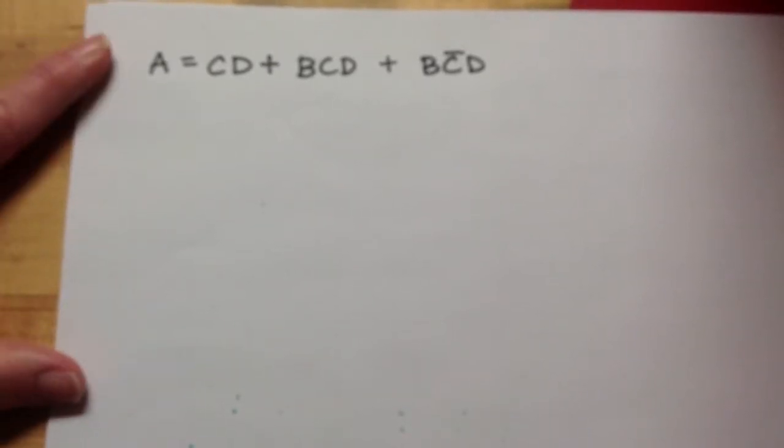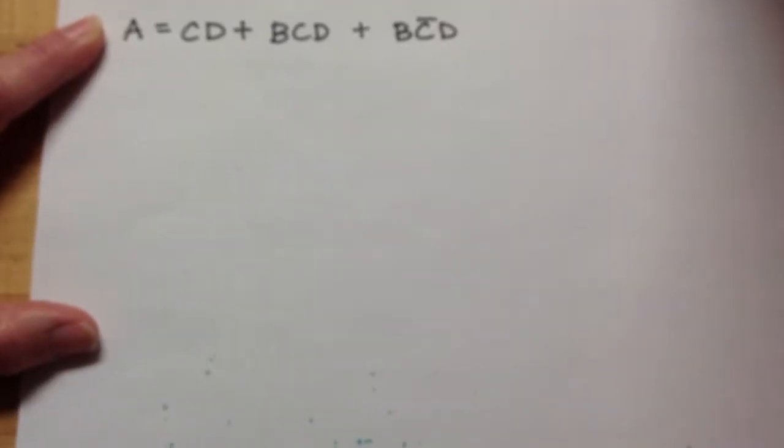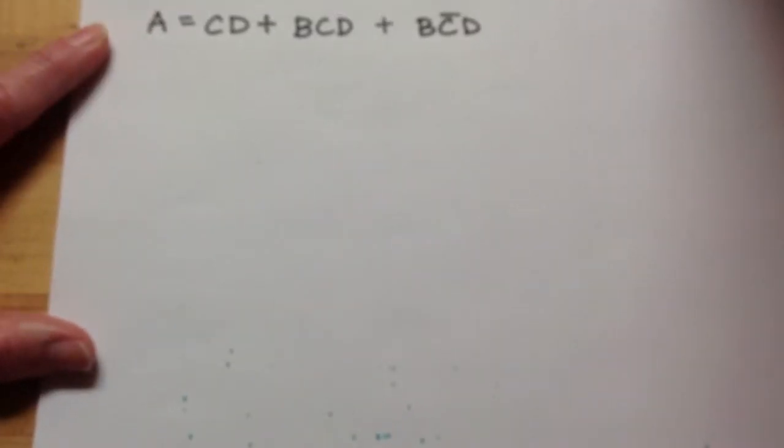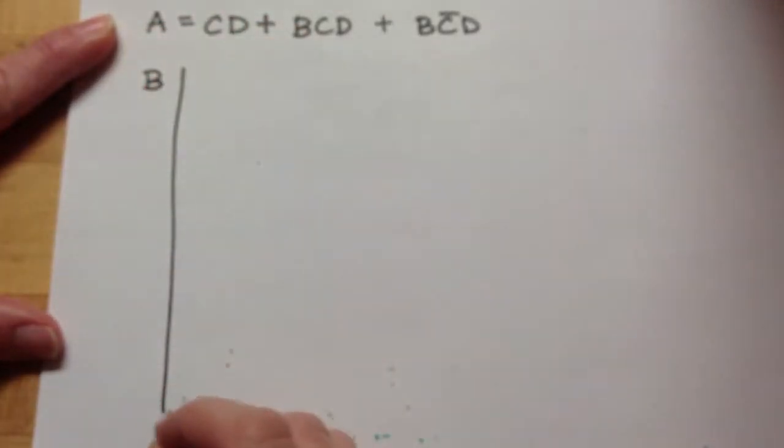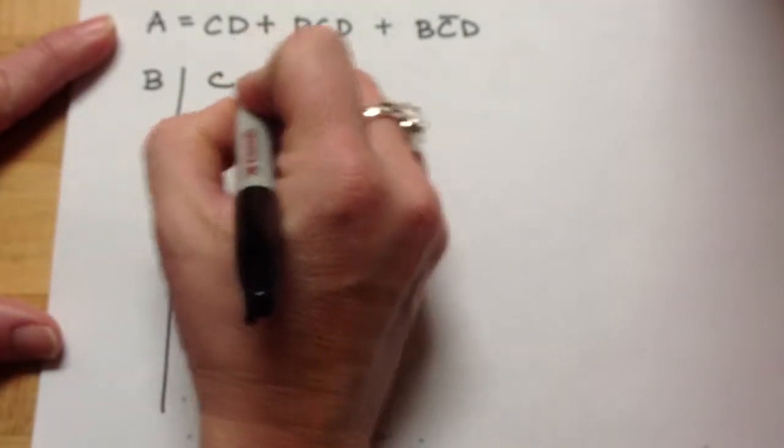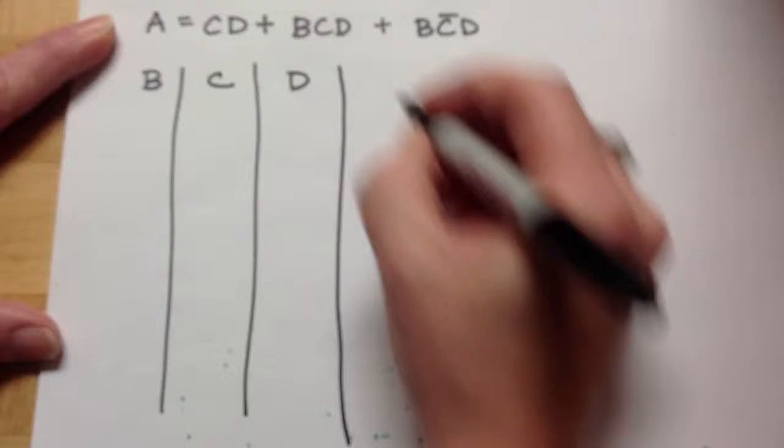Now what I'd like to do is I'm going to work through this example. I hope you've paused it now and worked the example for yourself. I'm going to do B, C, D. Those are my inputs. A is my output.